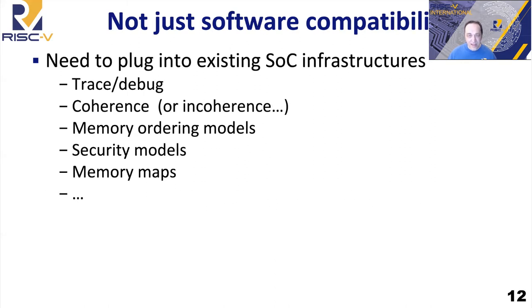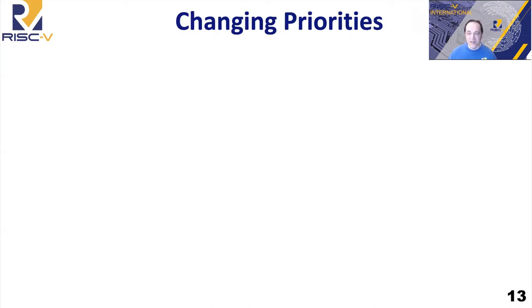I'll emphasize software in this talk, but really it's a bit more than just that. People also want the cores to plug and play into existing SoC infrastructures — trace and debug systems, the way memory handles coherence, memory ordering, security models, memory maps — all these things are factors. If you have an existing SoC design that you're moving to a new generation and want to replace some cores with RISC-V cores, these are the things you end up worrying about: how is it going to plug and play with the existing design?